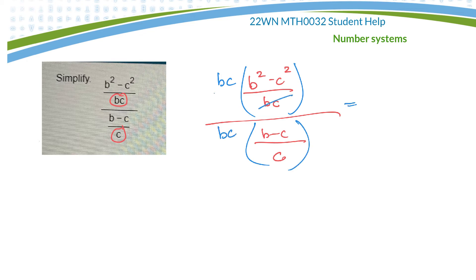So on the top, when the bc's cancel, leaving you with b squared minus c squared, on the bottom, the c's cancel, leaving you with b times b minus c.